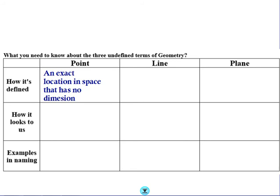How does it look to the average viewer? It looks like this, a point. And typically, there's a label that goes along with it, and then how would we name that thing? We would name that point A.